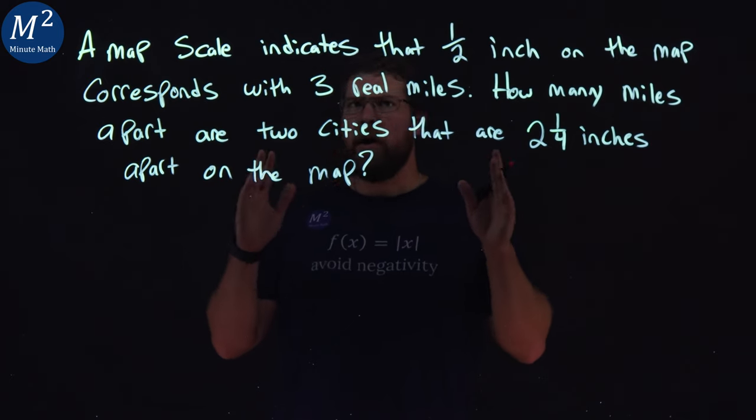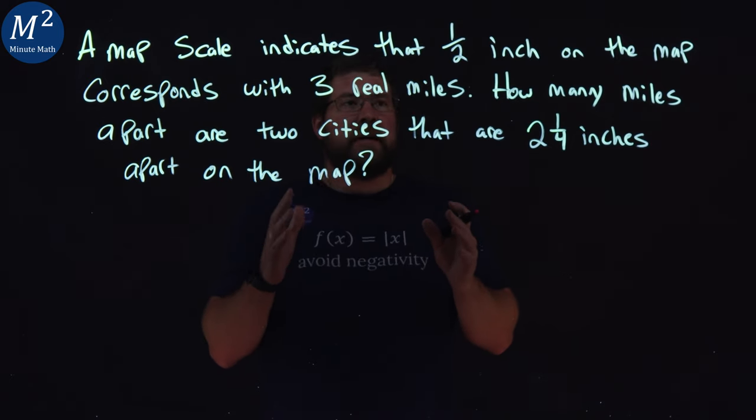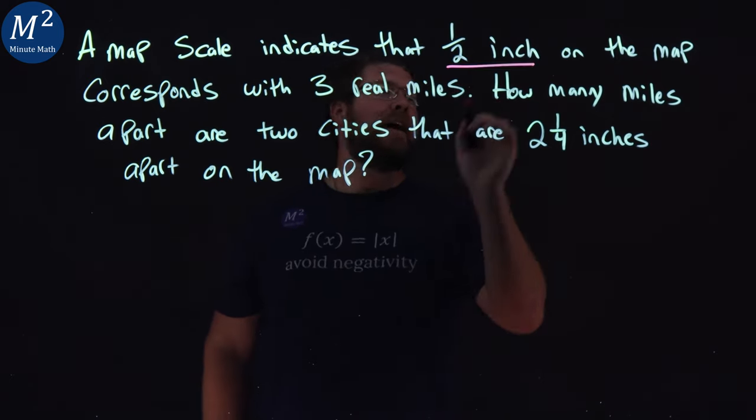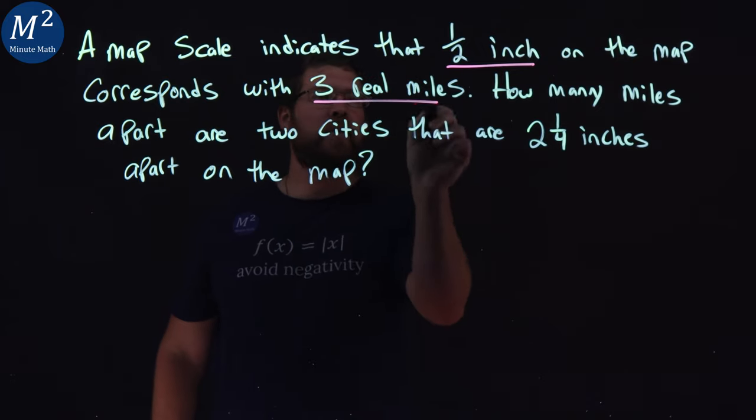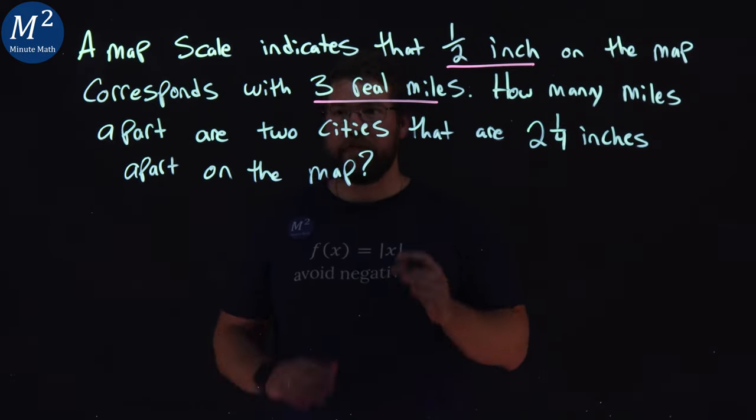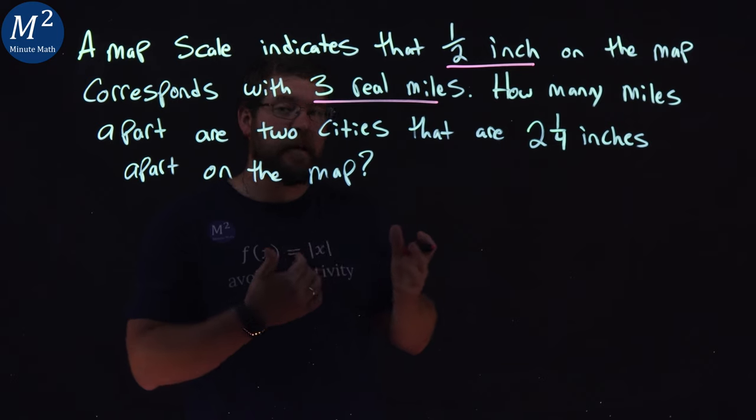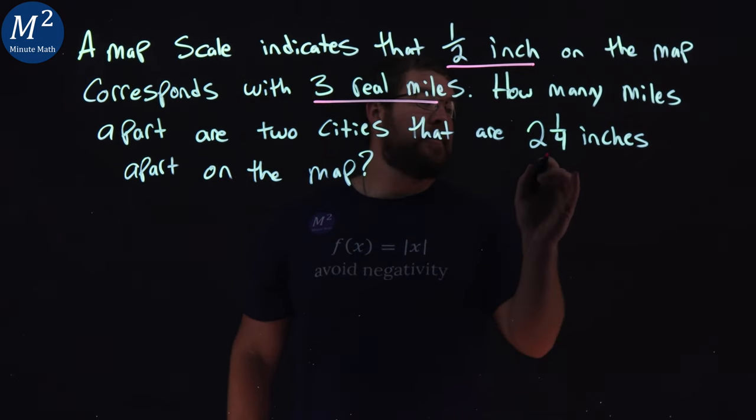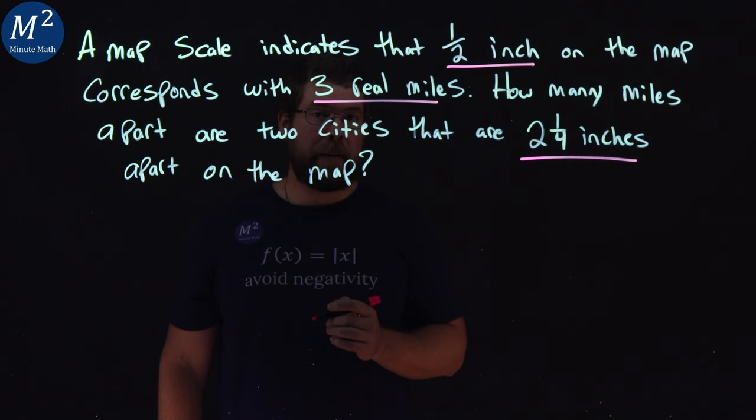Let's learn. We want to differentiate here the key parts. We have one-half inch on the map and three real miles in real life. That's our key here. And the two cities are two and a quarter inches apart on the map.